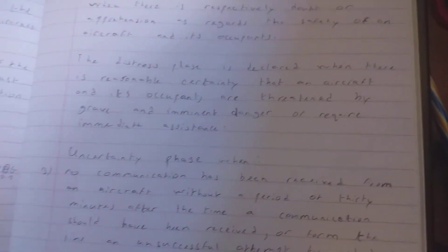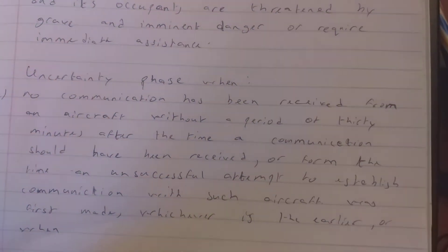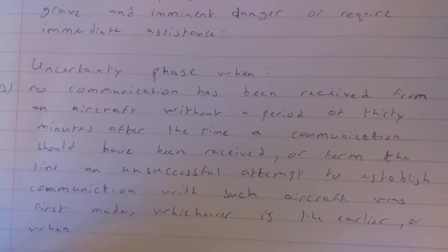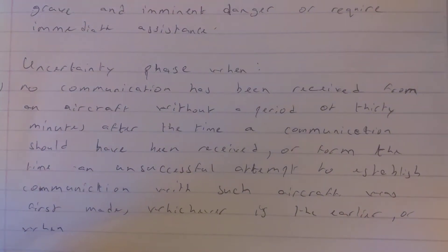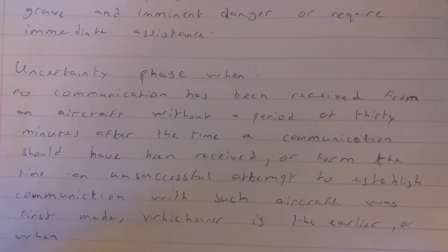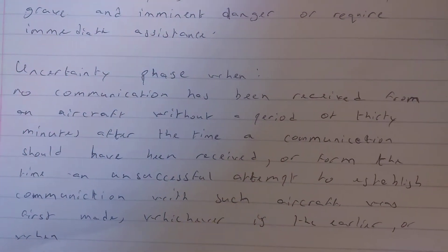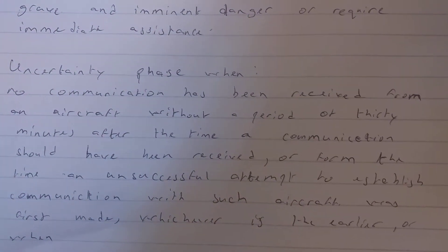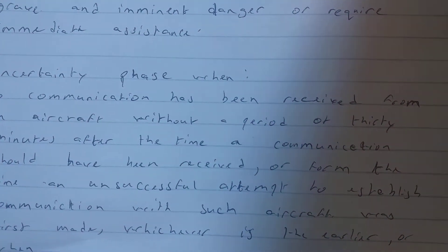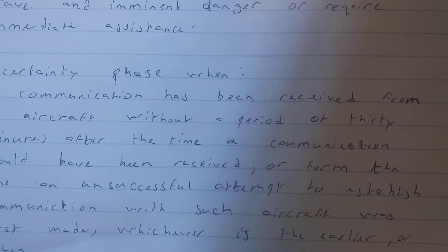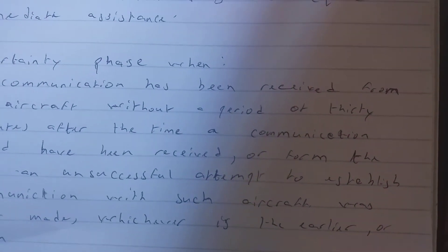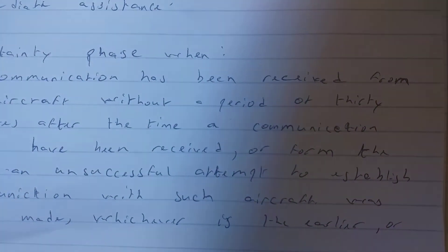Now we're going to look at the uncertainty phase and the conditions to declare it. We go to an uncertainty phase when no communication has been received from an aircraft within 30 minutes after the time a communication should have been received — for example, at a reporting point — if no contact is received from that aircraft after 30 minutes.